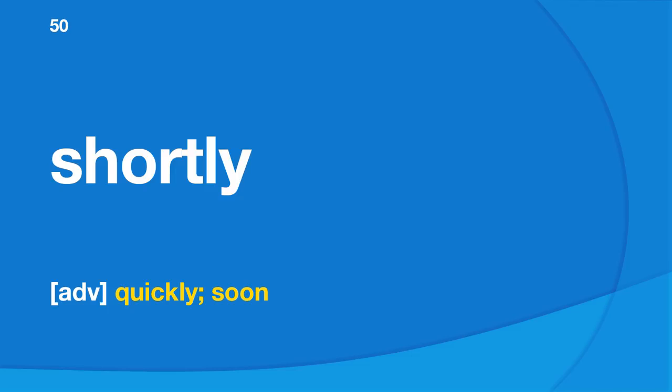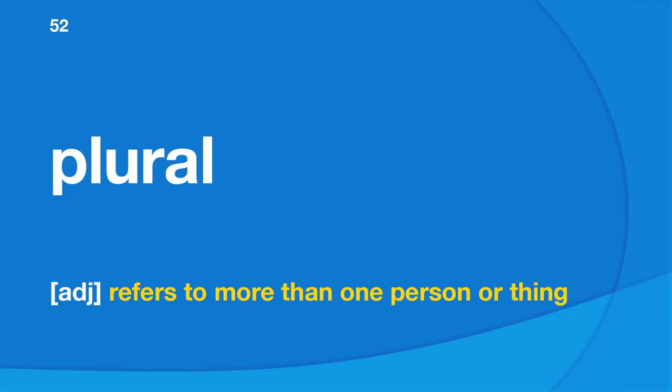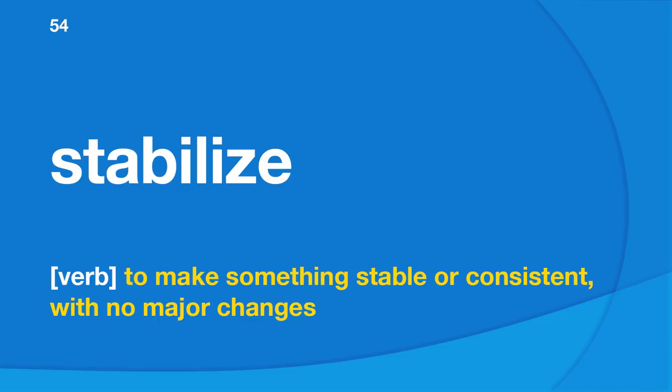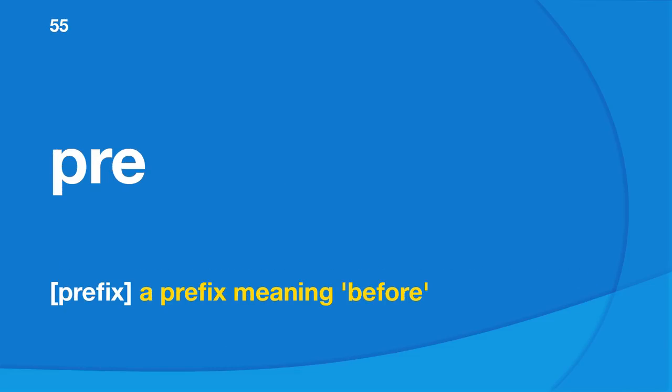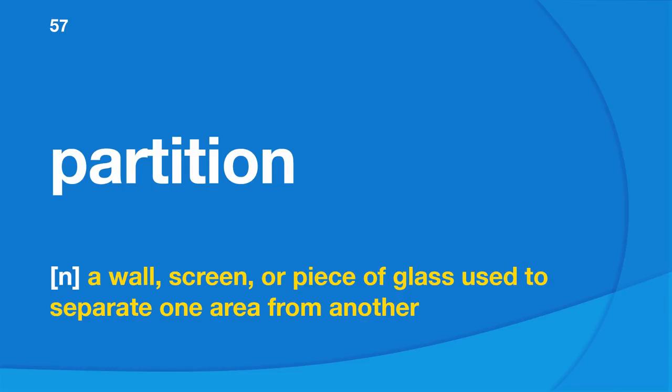Shortly: quickly, soon. Incumbent: a person who holds a particular office or position. Plural: refers to more than one person or thing. Ion: a charged atom. Stabilize: to make something stable or consistent, with no major changes. Pre: a prefix meaning before. Irrigation: supplying land with water using pipes. Partition: a wall, screen, or piece of glass used to separate one area from another.